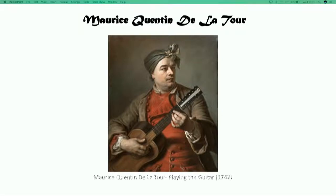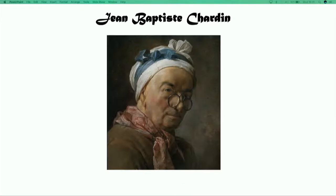Maurice Quentin de La Tour is a French Rococo artist who primarily worked in pastels. His portrait of Jacques Dumont Le Romain playing the guitar is done in oil pastel and was created in France around 1742. Jean-Baptiste Chardin created a very famous self-portrait in pastel in 1771.